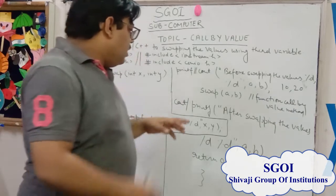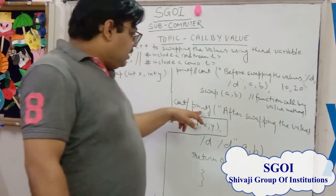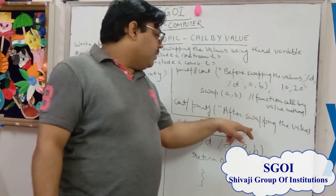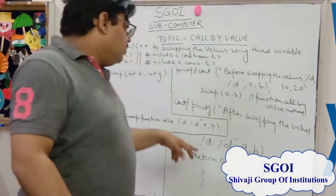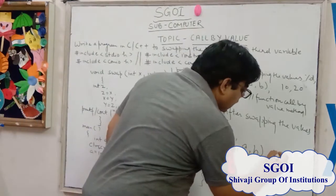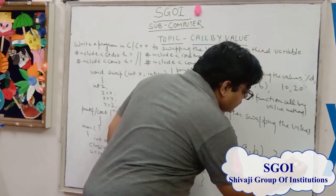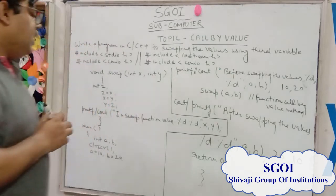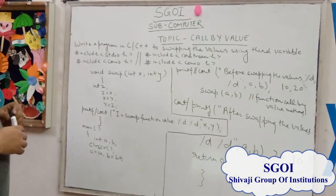The variables a and b are passed. After printing — after swapping — the values become 20 and 10, meaning swapping interchanges the values.